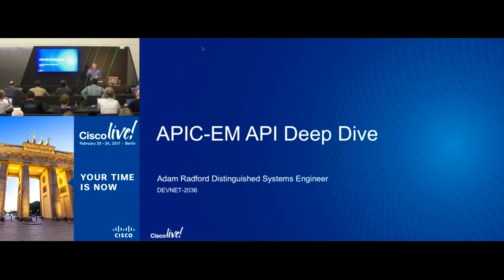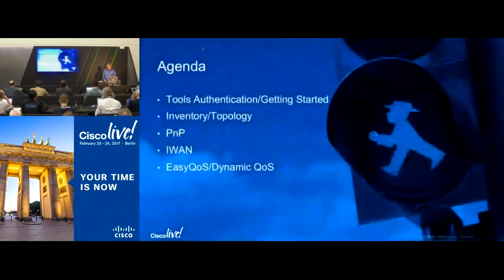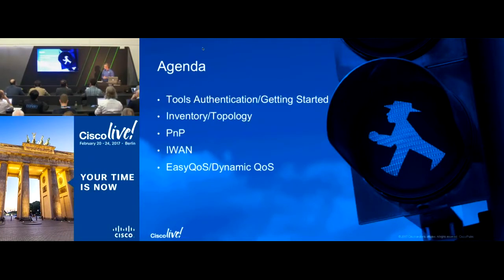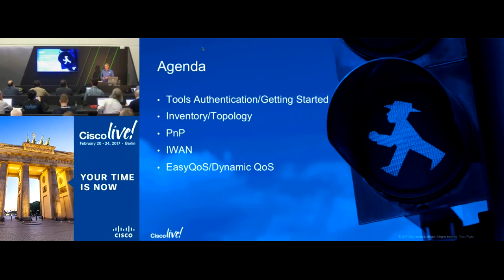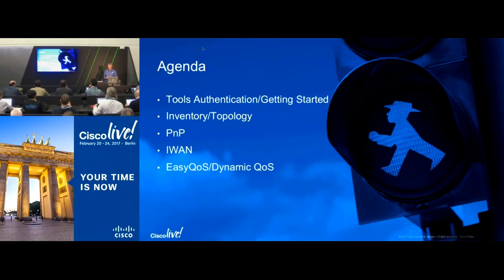If anyone's a triathlete or interested in Hawaii Ironman, come chat to me later. We're going to cover a few things today: a little bit about the overall view of the controller, some of the topology and inventory APIs, plug and play — which is a way of getting devices onto the network — possibly Intelligent WAN depending on time, and a little bit around EasyQoS and DynamicQoS.